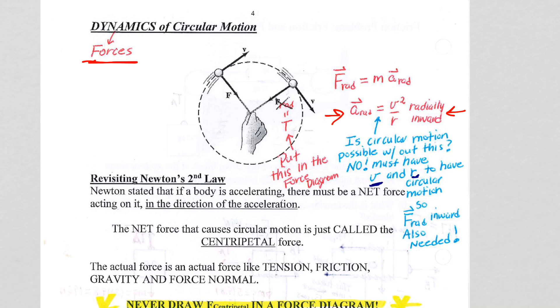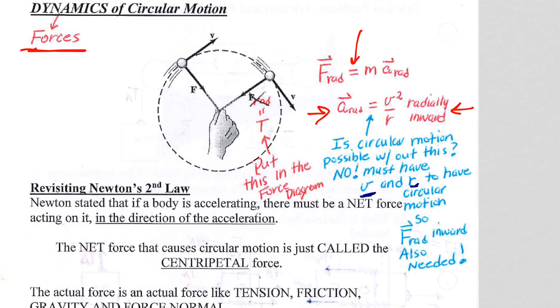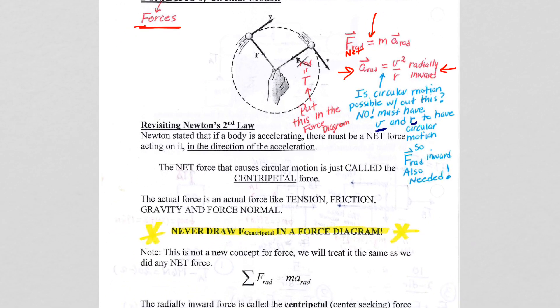we can associate it with a force by using F equals MA. So there has to be a net force radially inward to have circular motion. And we can set that equal to mass times acceleration, and we are going to look at example problems where we do that.